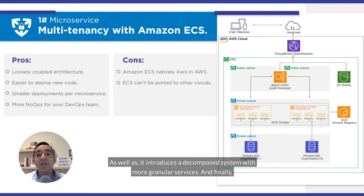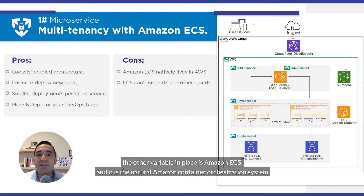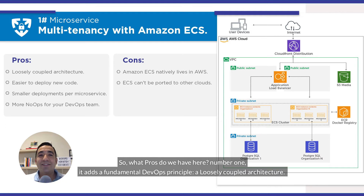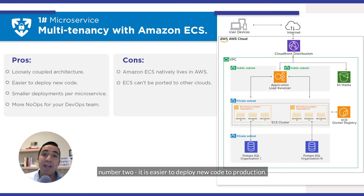It also introduces a decomposed system with more granular services. The other variable in place is Amazon ECS, which is the natural Amazon container orchestration system in the AWS spectrum. This architecture is highly recommended for startups, small, and medium SaaS companies. The pros: number one, it adds a fundamental default principle — a loosely coupled architecture. Number two, it is easier to deploy new code to production.